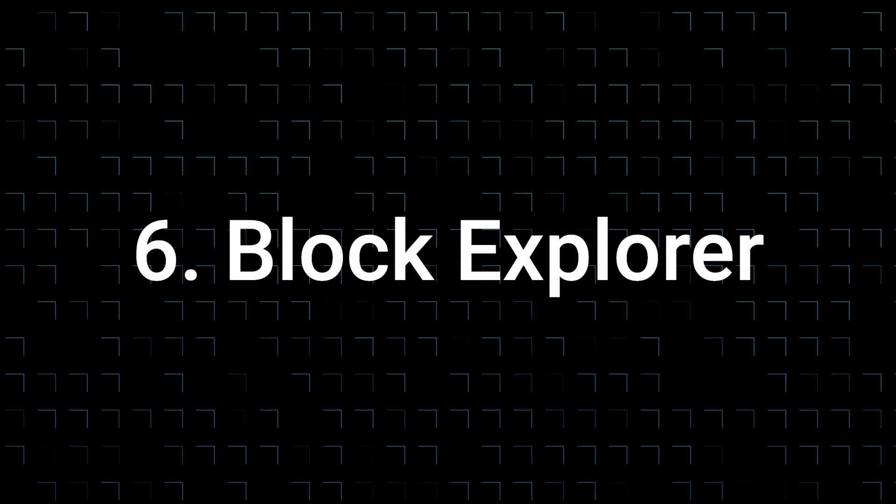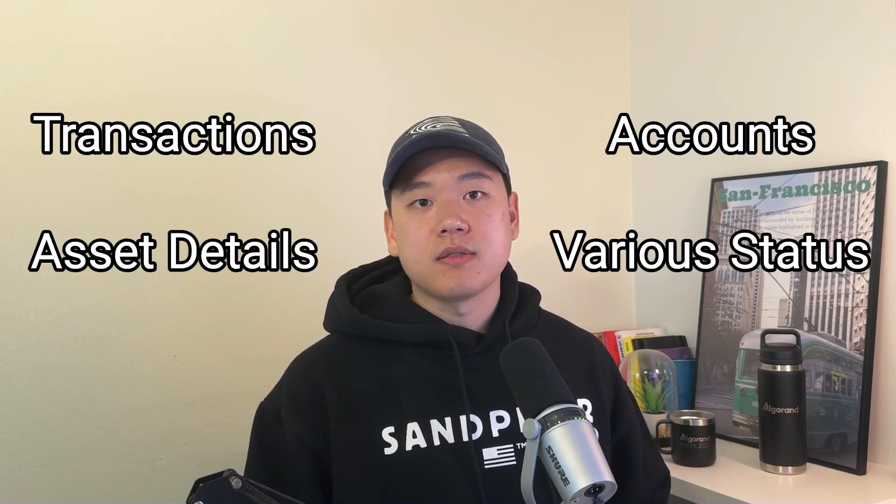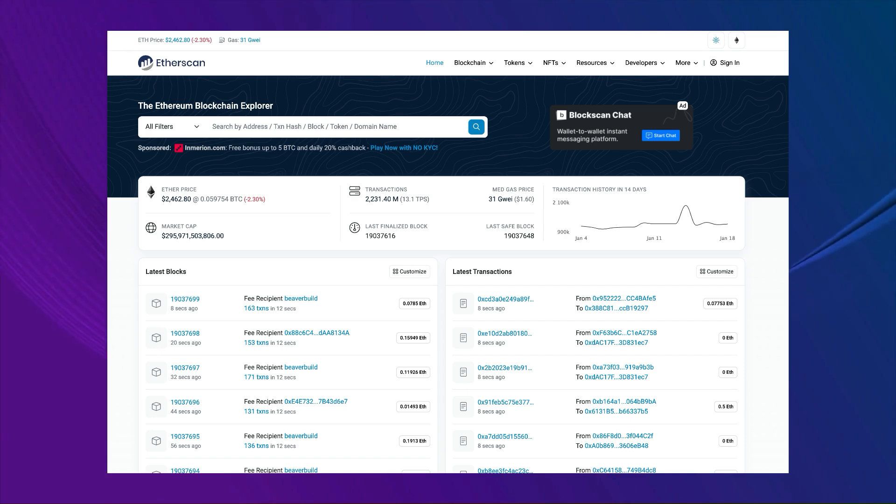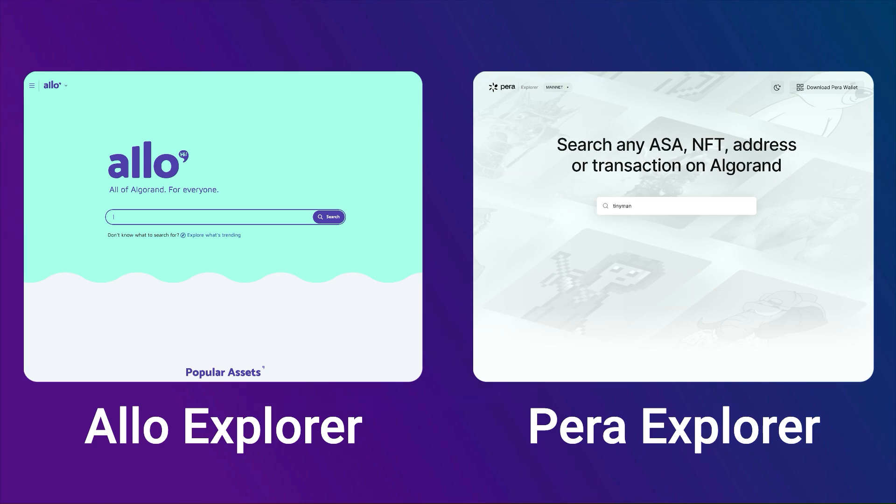Next up, Block Explorer. Block Explorer is also very important for blockchain developers, as you can use the explorer to check transactions, accounts, or asset details and statuses. Block Explorer is also a great debugging tool that shows what happens on the blockchain with your current code. Etherscan is the most popular Ethereum block explorer. On Algorand, the two most prominent block explorers are Allo Explorer and Para Explorer. If you want an explorer that can be configured to your local blockchain environment, you can use Dataflow.